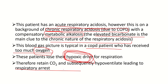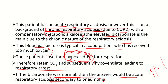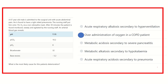The retained carbon dioxide and subsequent hypoventilation lead to respiratory arrest. If we cannot take immediate measures, the patient will die. If the bicarbonate was normal, the answer would be acute respiratory acidosis secondary to pneumonia. But the bicarbonate also increases to compensate the pH — however, this bicarbonate still fails to maintain the normal pH of 7.35 to 7.45. So our answer is the over-administration of oxygen in a COPD patient.